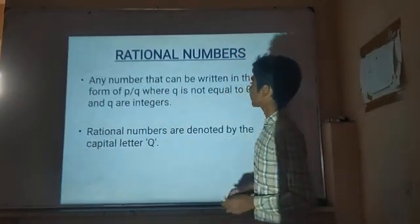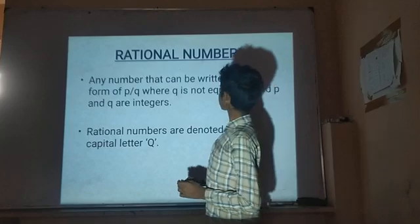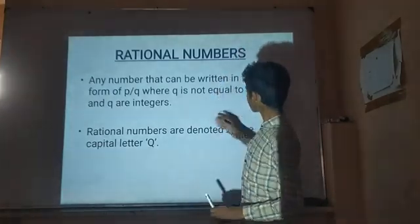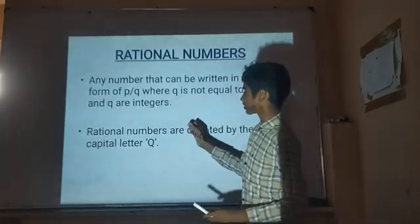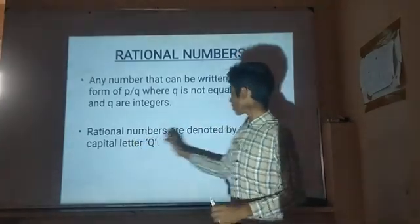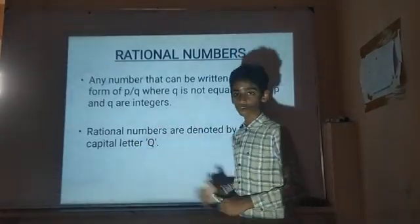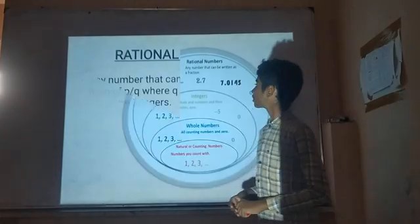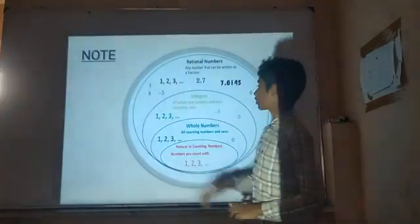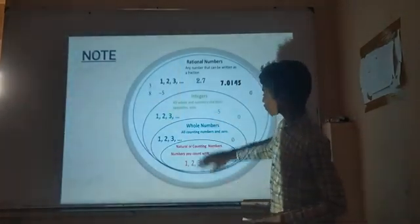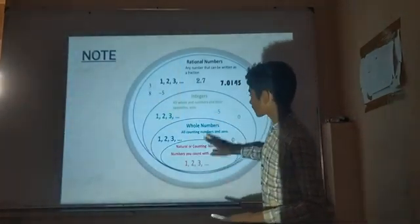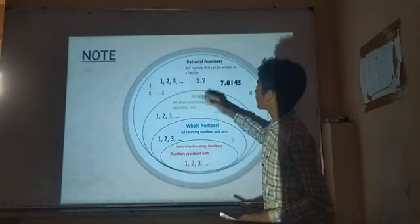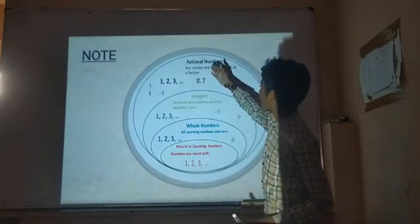Ratio Numbers: any number that can be written in the form of p by q, where q is not equal to 0 and p and q are integers. Ratio Numbers are denoted by the capital Q. The diagram shows that natural numbers come within whole numbers, whole numbers come within integers, and integers come within ratio numbers.